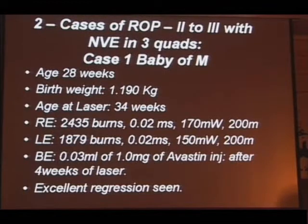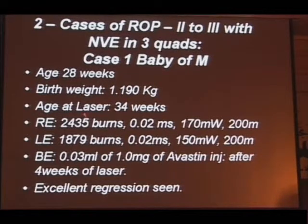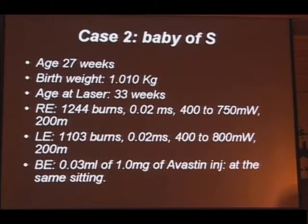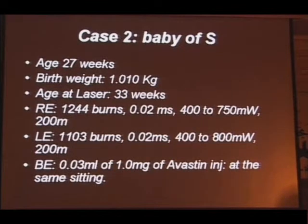We had two children with ROP whom we treated with combination therapy. The first was a 28-week premature child with a birth weight of 1.299 kg. At 34 weeks, we noticed stage 3 ROP and underwent conventional peripheral laser for both eyes. Four weeks after the laser, finding persisting proliferation, we injected 0.03 ml of bevacizumab. The second case was similar — 27 weeks at 1.01 kg. At 33 weeks we saw progression and performed laser, and having learned from the previous case, we simultaneously injected bevacizumab. This showed excellent regression and no further progress of the disease.